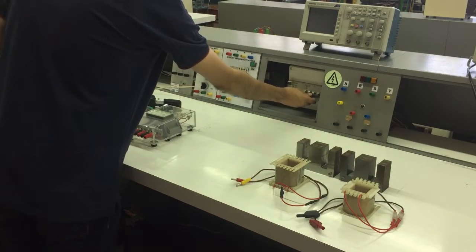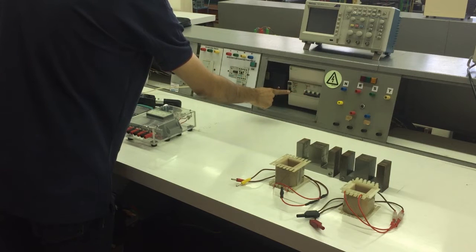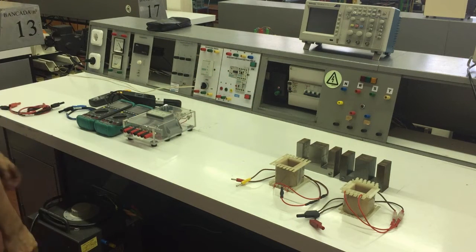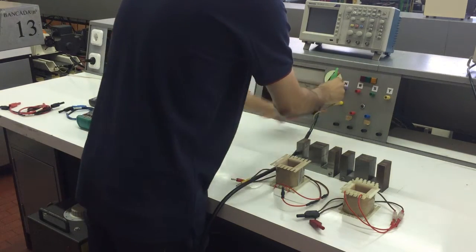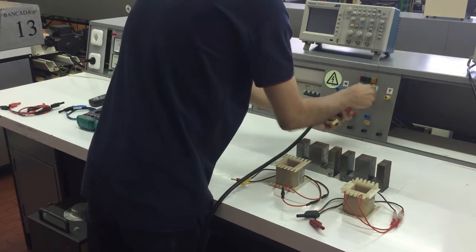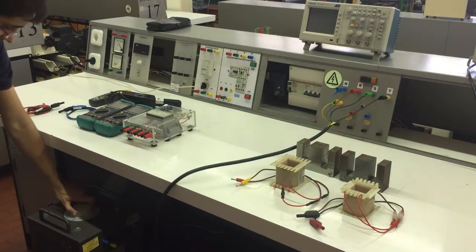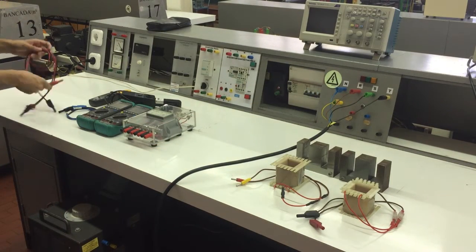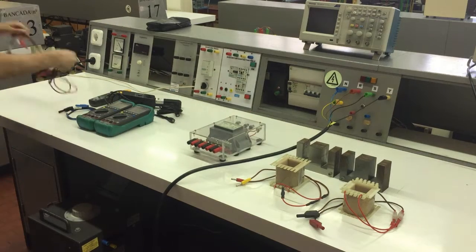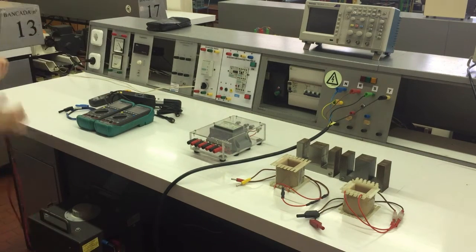To start, verify if the power grid is disconnected. Next, connect the primary of the autotransformer to the power grid. Then, connect the secondary of the autotransformer to the instrument transformer.